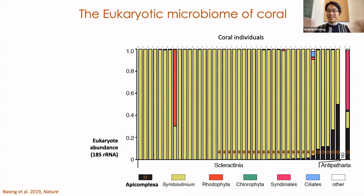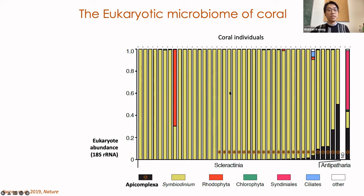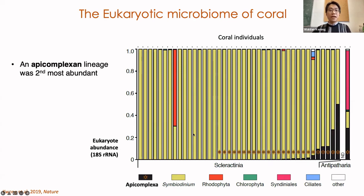We did this and here is what we found. Each column represents a single coral sample collected in the southern Caribbean. Different colors are different microbial eukaryotes making up the communities in each sample. As expected, most of the community consists of the primary endosymbiont, Symbiodinaceae. However, we can also see that there is another organism present that can be quite prevalent — shown here in black — which ended up being a lineage of Apicomplexa. In fact, it was the second most abundant member of the eukaryotic microbiome of corals after the Symbiodinaceae.